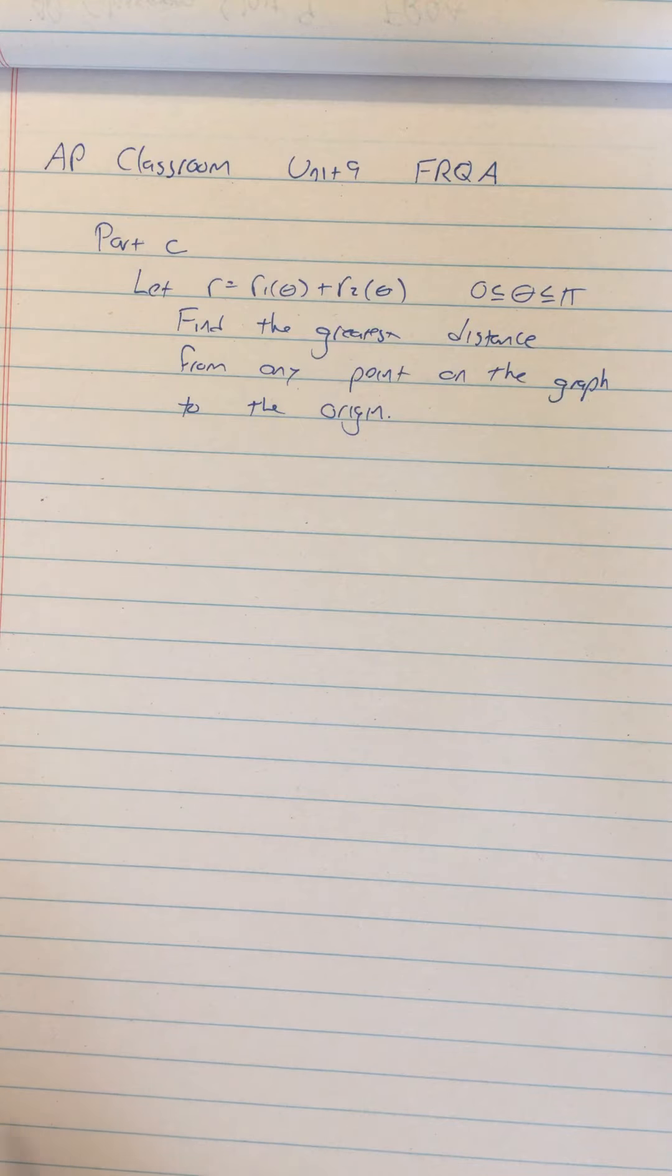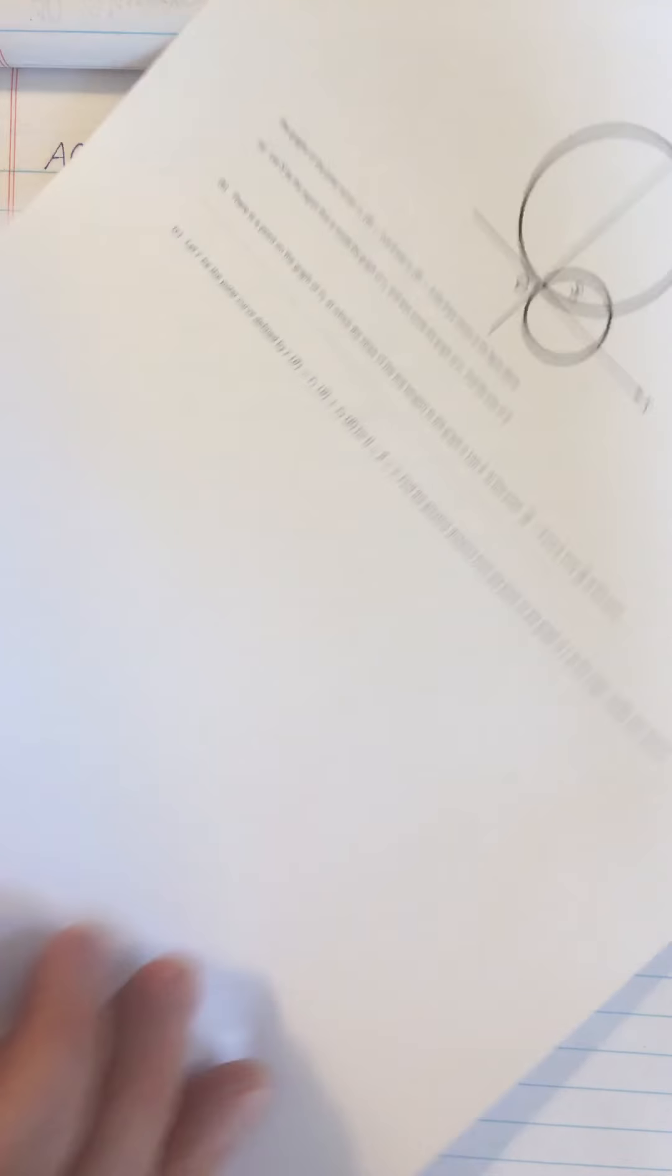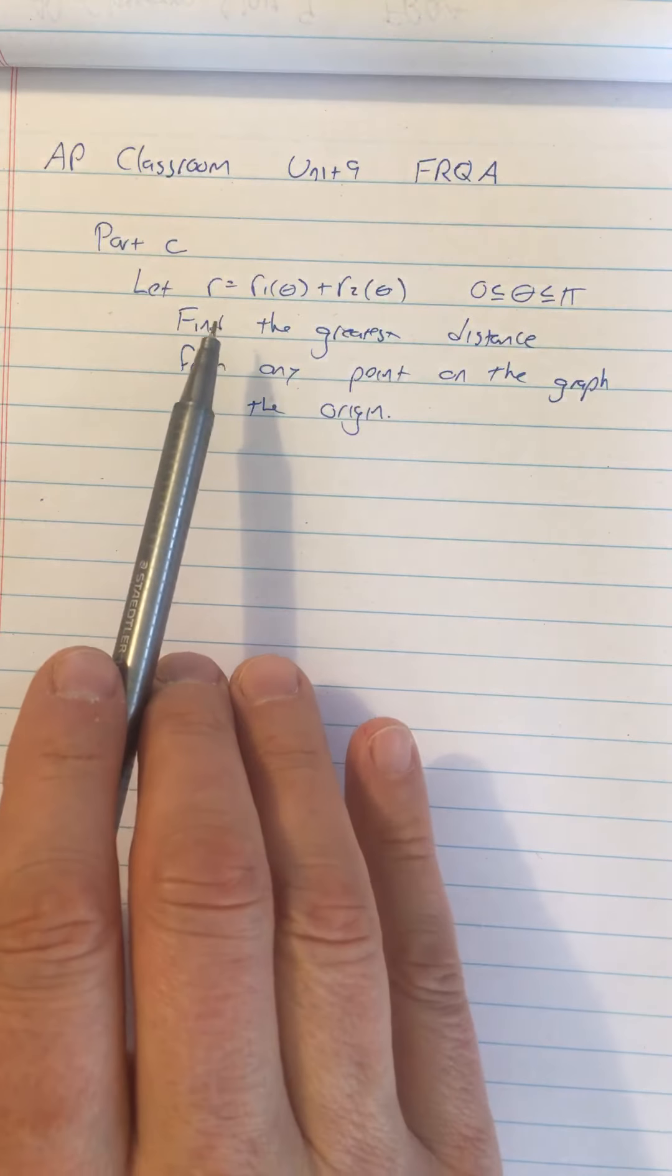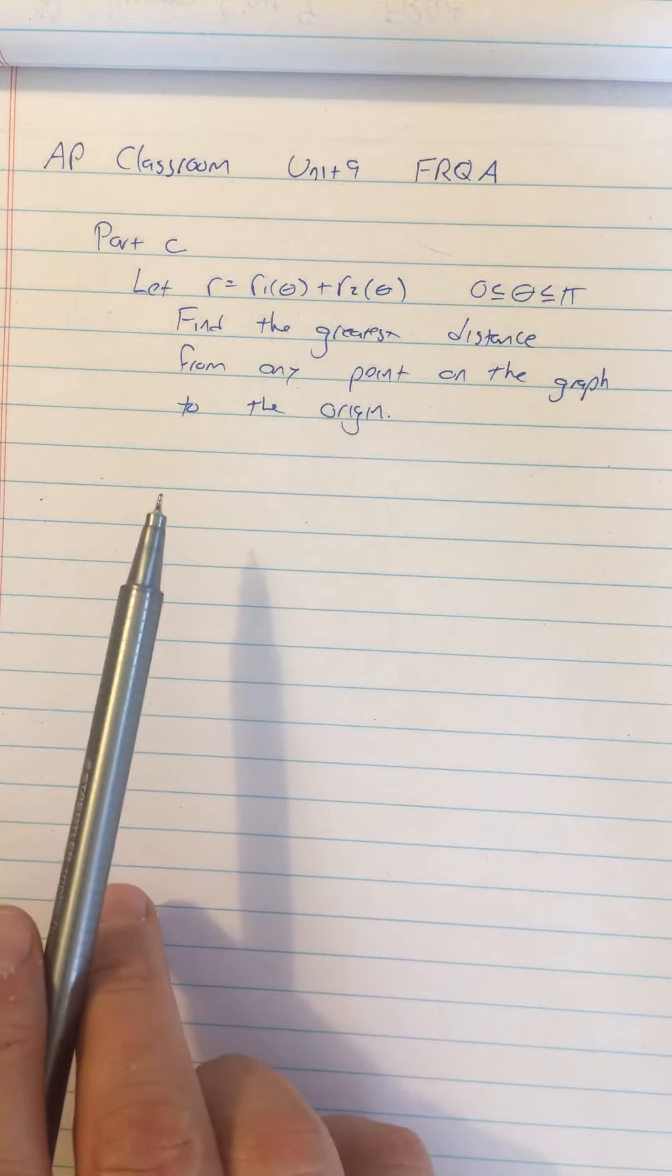So now they've told us in this Part C, let R be equal to R1 theta plus R2 theta on the interval 0 to pi. Find the greatest distance from any point on the graph to the origin.